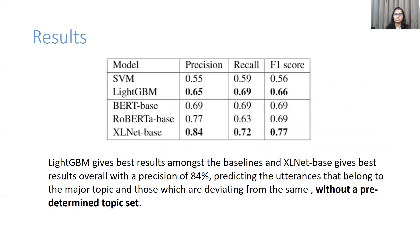Our main aim is to segment the conversation and label each segment with the tag of major topic or not. The novel factor of our model is that, unlike previous work done in this field, we don't assume a predefined topic set for topic classification. LightGBM gives the best results amongst the baselines, and XLNet-Base gives the best results overall, with a precision of 84 percent in predicting utterances that belong to the major topic and those which are deviating from it.